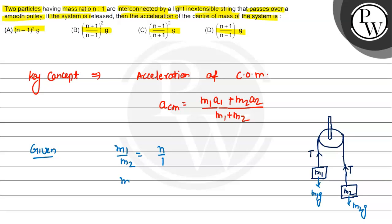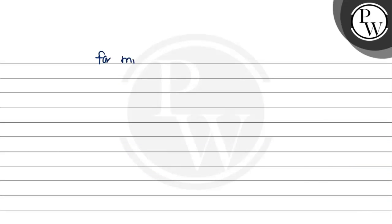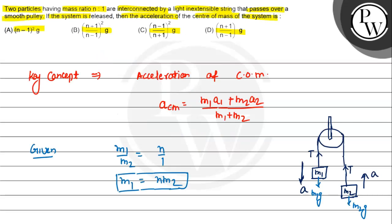The whole system is such that m1 goes down with acceleration a, and m2 goes up with acceleration a. Applying Newton's second law for m1: m1·g − T = m1·a. For m2: T − m2·g = m2·a. The accelerations are the same since both masses are connected by the string.